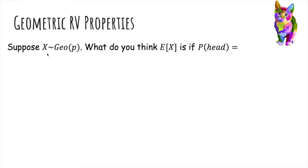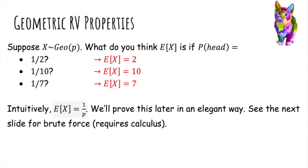So now let's do an example. So suppose X is geometric with parameter p. What do we think the expected value of X is if the probability of head is half? Well, I personally think it would be 2. If the probability of heads were 1 tenth, I would think it would take me 10 tries to get my first head. And 1 seventh, it would be 7. So intuitively, the expected value of X is 1 over the probability. We'll prove this later in an elegant way, but the next slide we'll use brute force. And the variance is also messy.